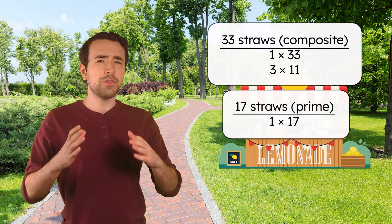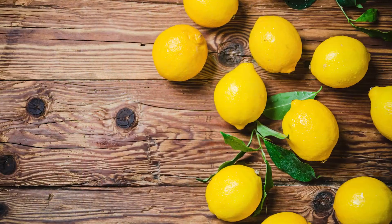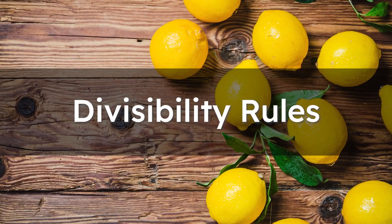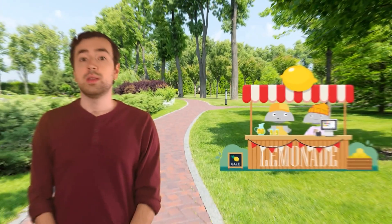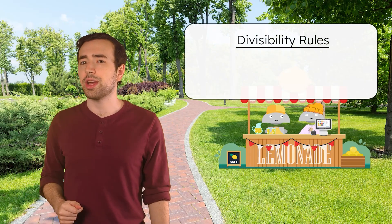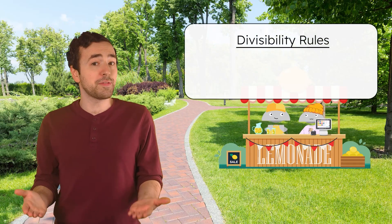But what if we have a bigger number, like 72, 87, or 97? How can we figure out if they're prime or composite? Instead of guessing or testing every number, we can use divisibility rules to help us quickly check for factors. You actually know a few already.